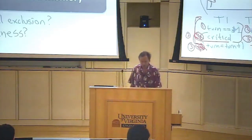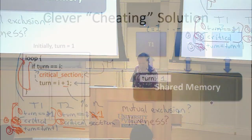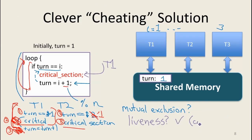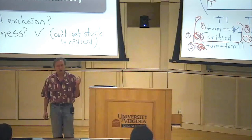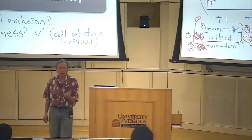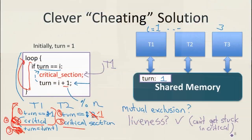According to Dijkstra's requirement, the turn solution does satisfy liveness so long as no thread gets stuck. Actually, in this case it's an even stronger property — thread 1 has to finish its non-critical section as well as its critical section before the next thread gets its turn. So this is a bit of a stronger property than the other solutions have.